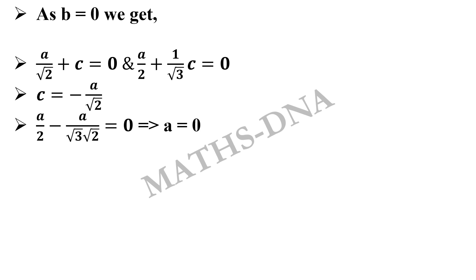...we have a/2 - a/(√3·√2) = 0, which clearly implies a has to be 0. So a = 0, and c is again dependent on a, so when a becomes 0, c also becomes 0. So we found a = b = c and all are equal to 0.